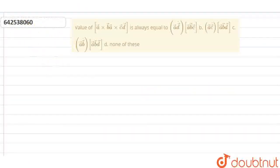Hello students, today's question is: Value of box of A cross B, A cross C and D is always equal to which of the options? We need to check.